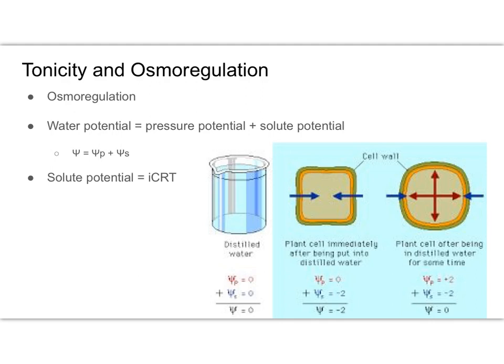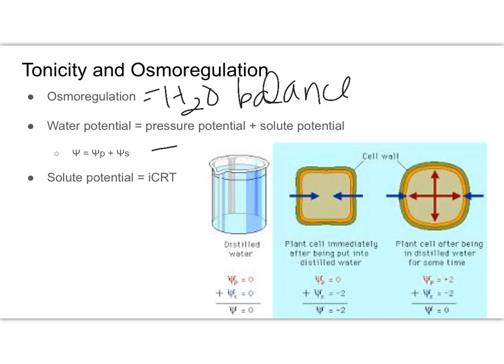Now let's look at some calculations. Osmoregulation is maintaining our water balance, which allows our cells to control their internal solute composition — not too much salt, water, or potassium. We can calculate this using water potential. Water potential equals pressure potential plus solute potential — this is the formula using the Greek symbol psi (Ψ). This formula is on your formula chart, as is the solute potential formula Ψs = –iCRT.